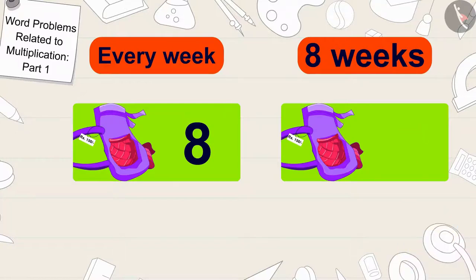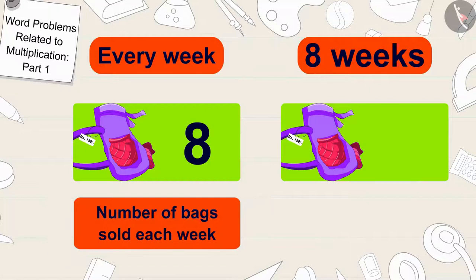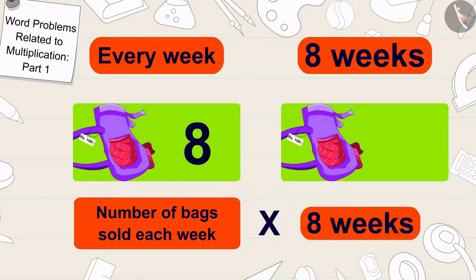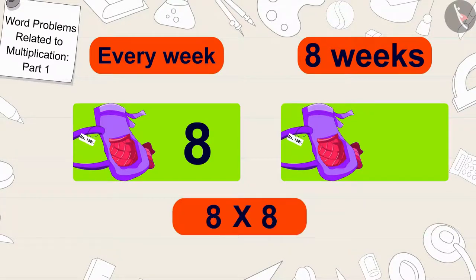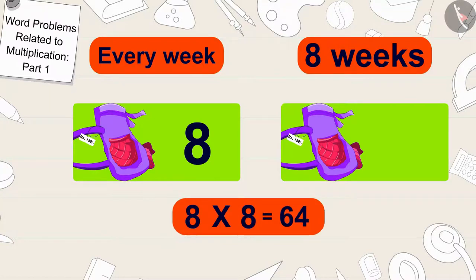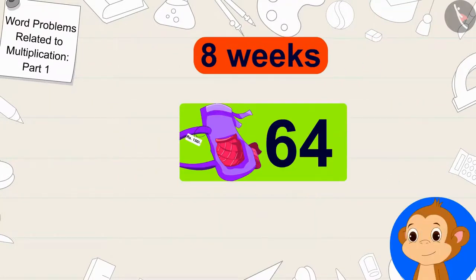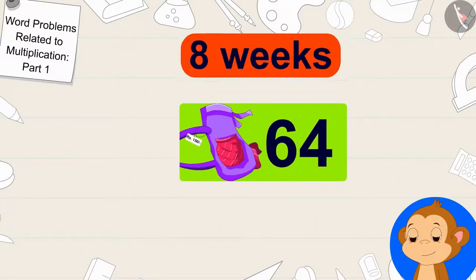Exactly, the number of bags sold each week has to be multiplied by the total number of weeks. 8 times 8 became 64. Babban will sell 64 bags in 8 weeks.